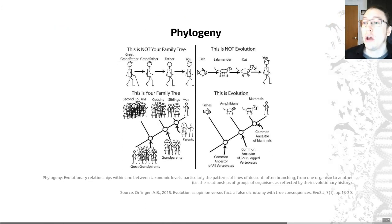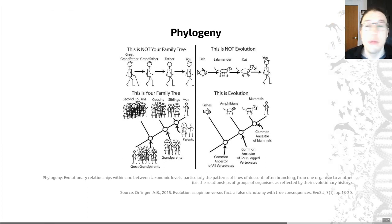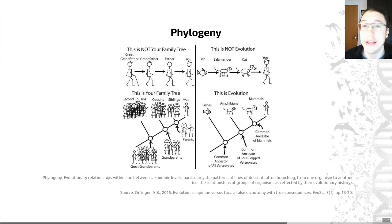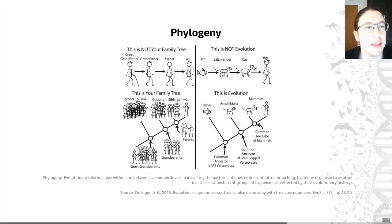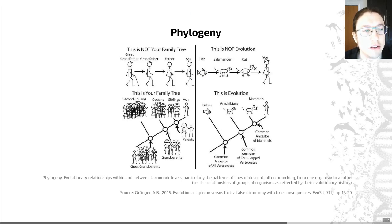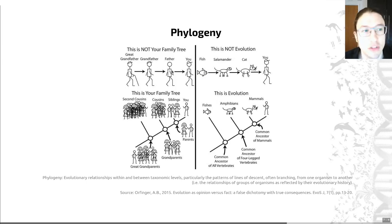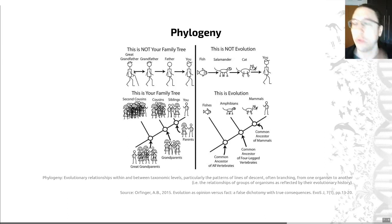Evolution over time can be thought of as a tree, much like your family tree, and like a family tree it's not a linear process. We often tend to think of our family tree as a straight line — we are descended from our parents who are descended from our grandparents, and so on — but that's not true.